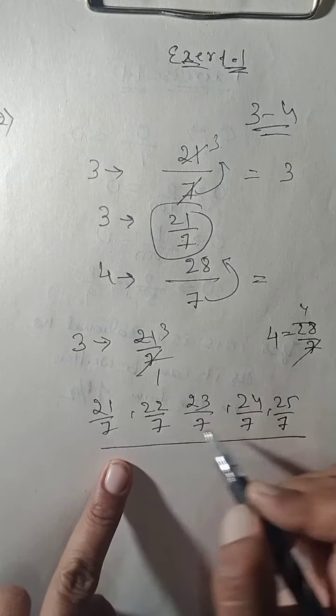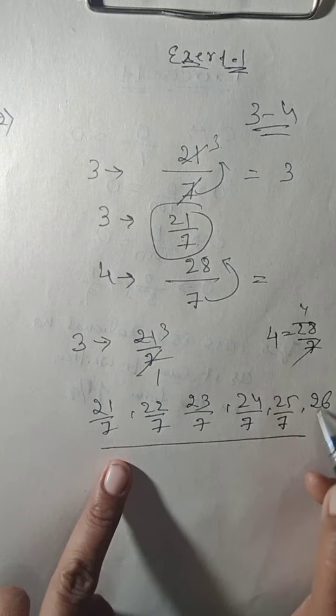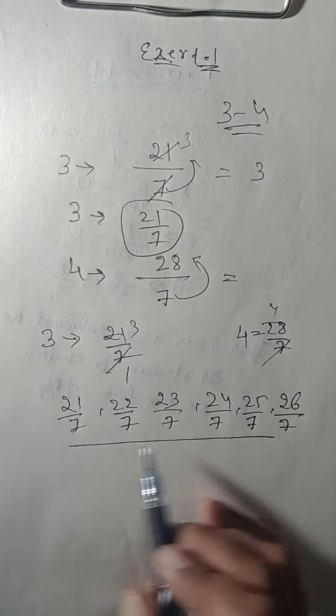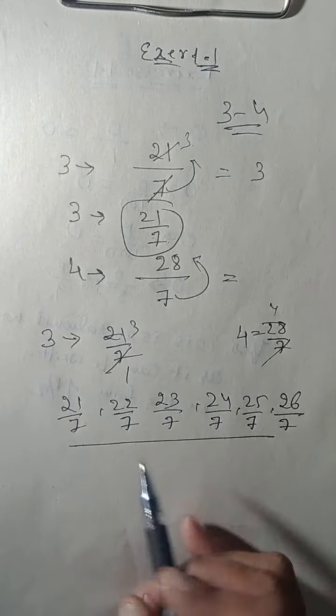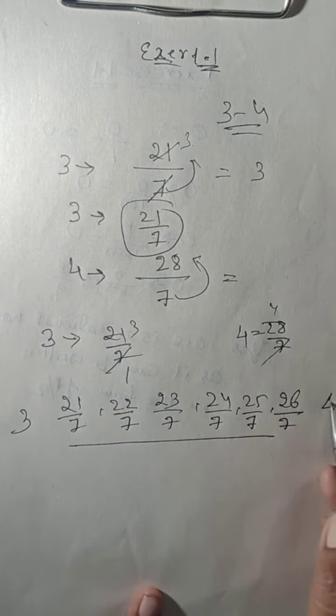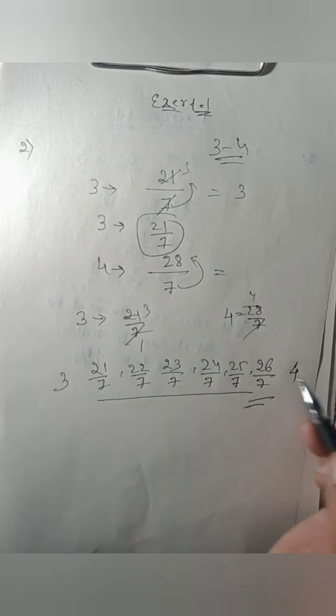We'll stop here because they told us to find how many? Six. They told now 1, 2, 3, 4, 5 and one more, you can write here 26 upon 7. These are the six rational numbers between 3 and 4.